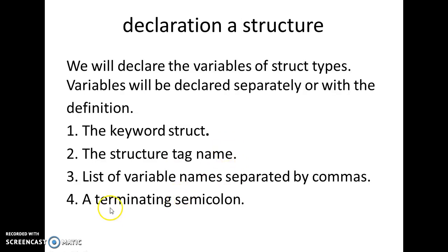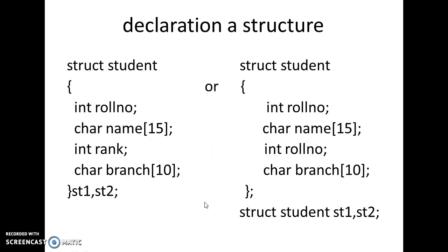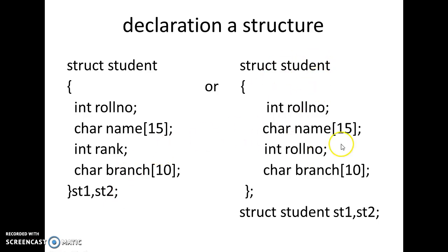Let us see one example. I have considered a student structure: 'struct student'. A student may have roll number, name, rank, and branch. Roll number is of integer data type, name is of character (string) data type, rank is of integer data type, and branch is also of character data type. You can also include a float field for marks. Here I have taken two students, st1 and st2, as structure variables, ending with a semicolon.